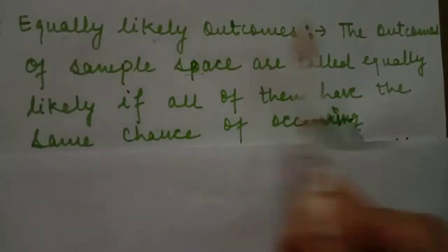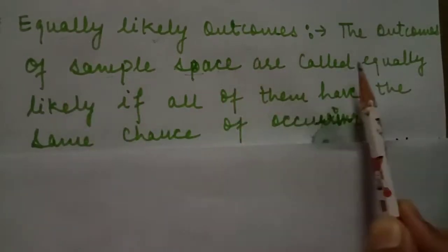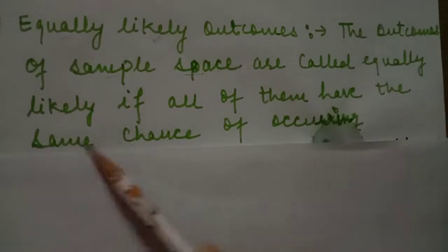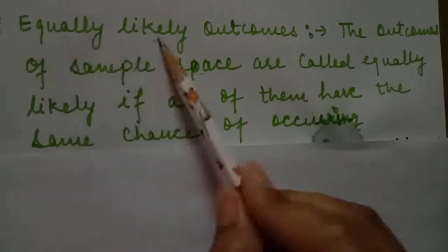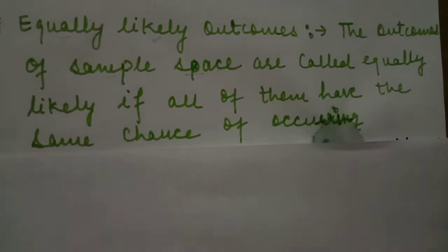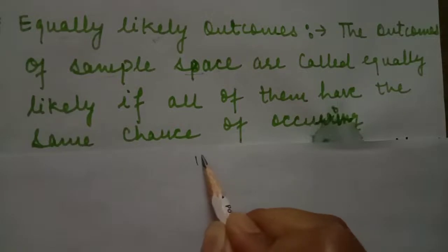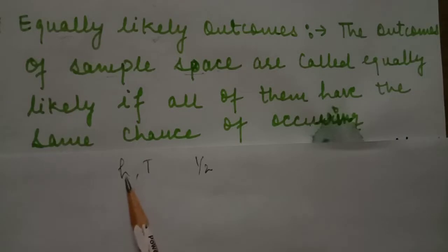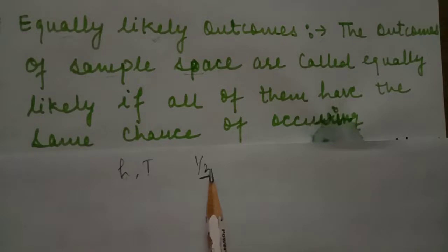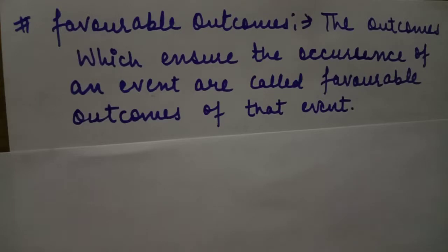Equally likely outcomes: the outcomes of a sample space are called equally likely if all of them have the same chance of occurring. For example, when we toss a coin the possible outcomes are head and tail. The probability of getting a head is 1/2 and the probability of getting a tail is also 1/2, so they are equally likely outcomes.